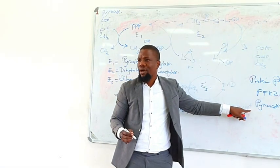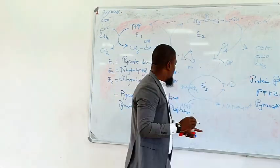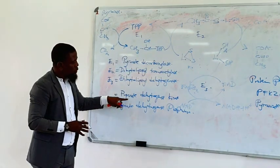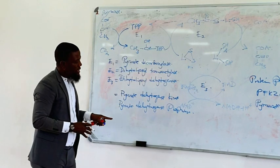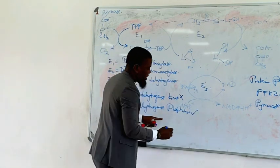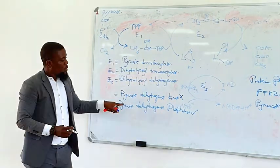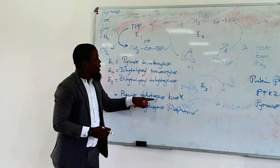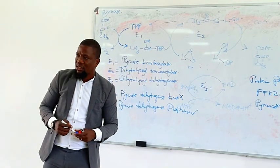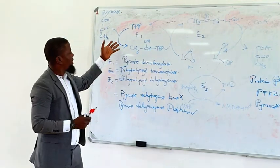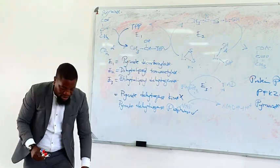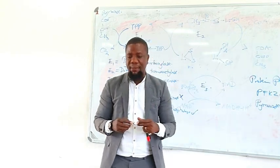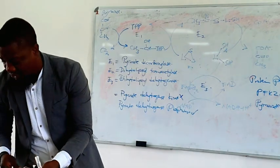At the same time, protein phosphatase 1 will dephosphorylate these two regulatory enzymes - the kinase and the phosphatase. When these two enzymes have been dephosphorylated, the kinase becomes inactive while the phosphatase becomes active. When the phosphatase is activated, its role is to dephosphorylate pyruvate dehydrogenase, and when it is dephosphorylated, it plays its role and pyruvate is converted into acetyl-CoA. This makes sense because conversion of pyruvate into acetyl-CoA should mainly happen when you have enough carbohydrates.